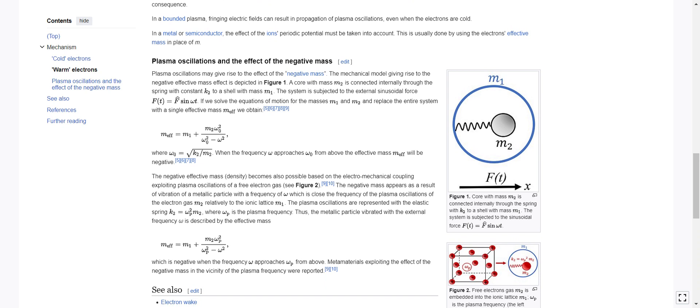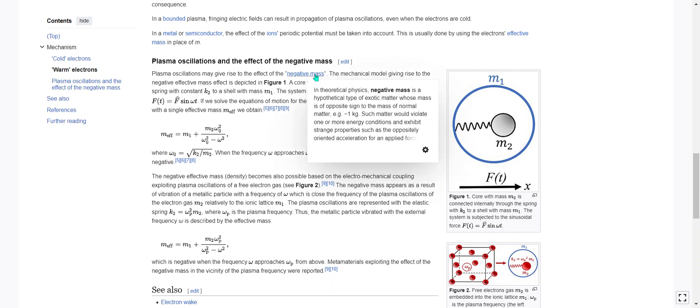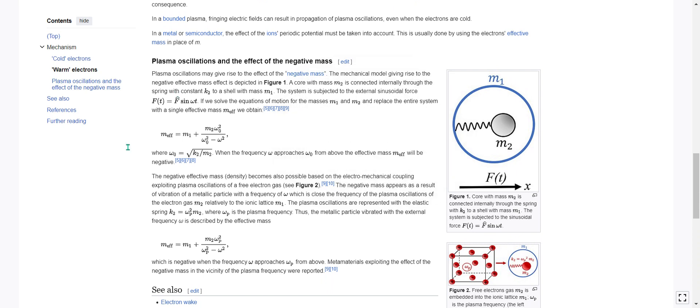Plasma oscillations and the effect of the negative mass. Plasma oscillations may give rise to the effect of the negative mass. In theoretical physics, negative mass is a hypothetical type of exotic matter whose mass is of opposite sign to the mass of normal matter. Such matter would violate one or more energy conditions and exhibit strange properties, such as the oppositely oriented acceleration for an applied force. The mechanical model giving rise to the negative effective mass effect is depicted in figure one.